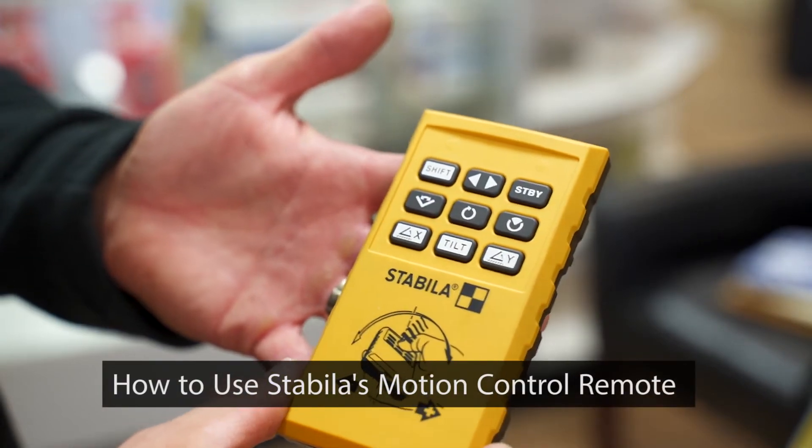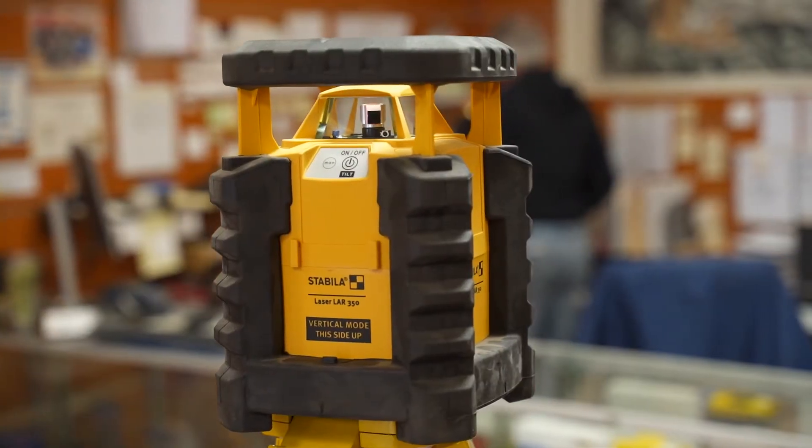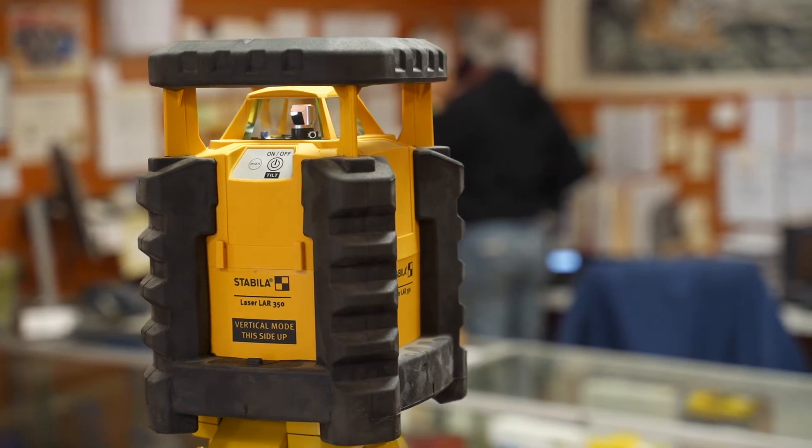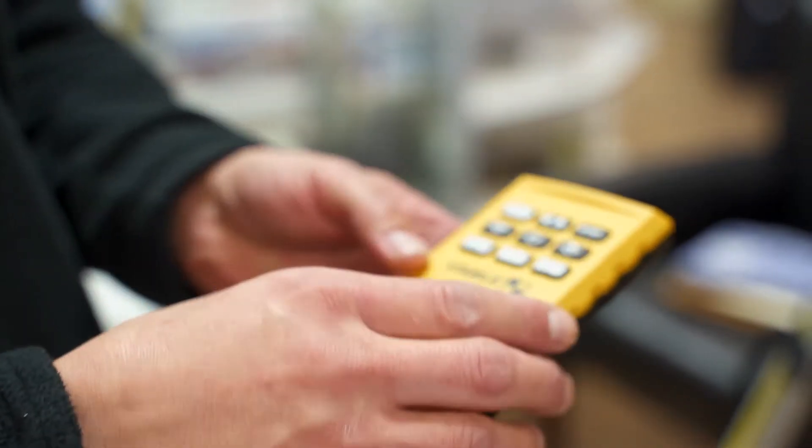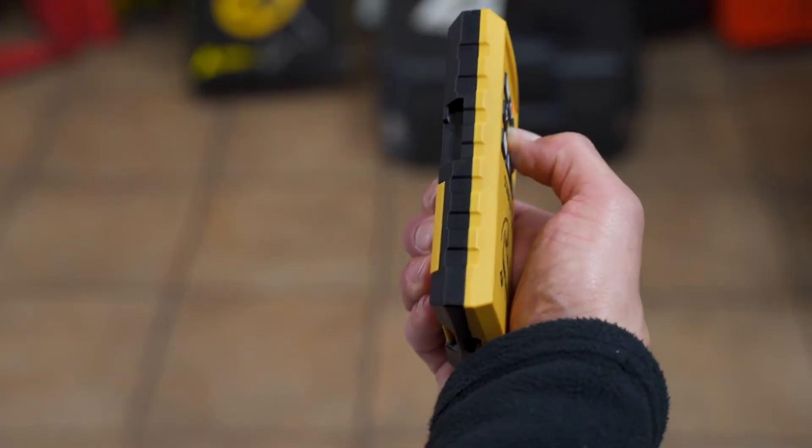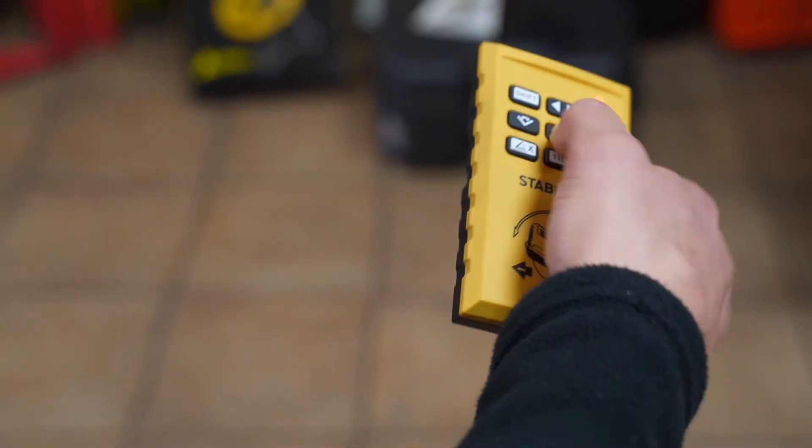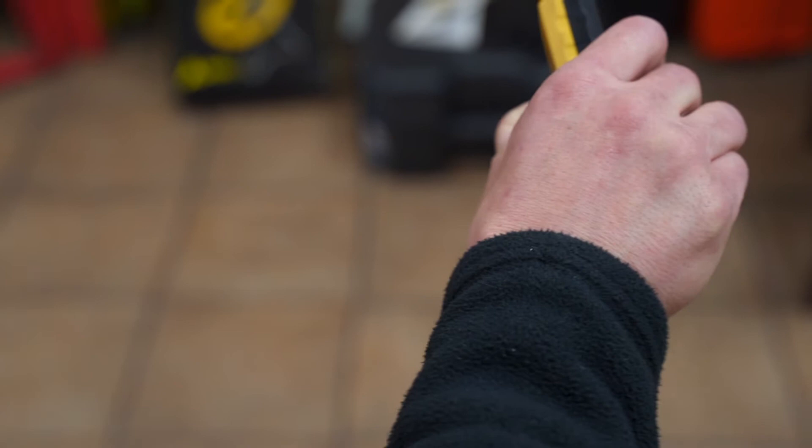So this is a motion control controller that goes with the actual LAR350 unit. By motion control, what I mean is much of these buttons and the features and functions work by actually tilting your wrist to the right or to the left to control a whole host of features and functions.